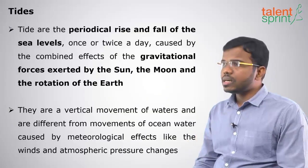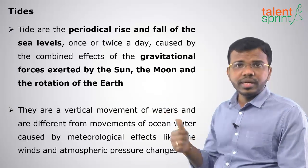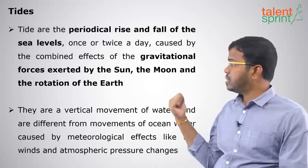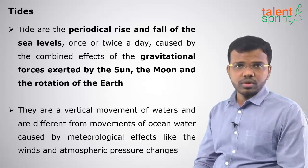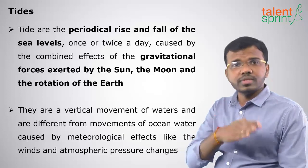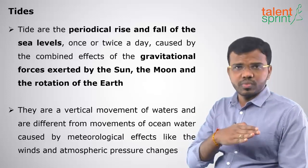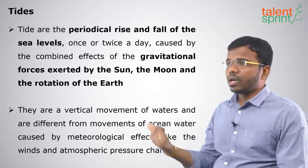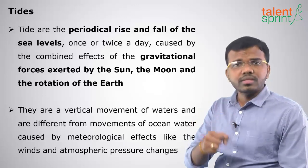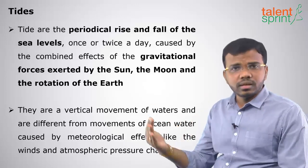Moving on to tides. Tides are the periodical rise and fall of water, and they are the vertical movement of water — not horizontal movement like waves. They are caused because of the gravitational pull between the sun, earth and the moon.